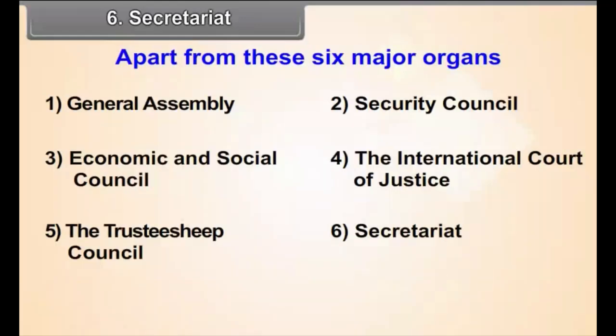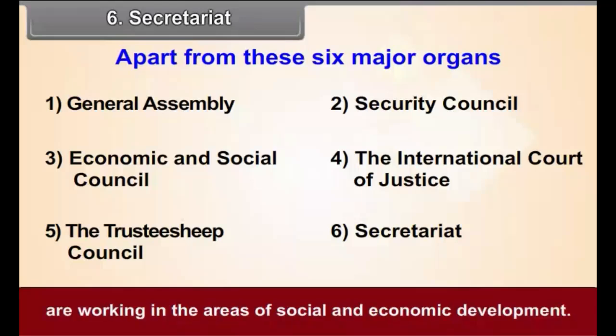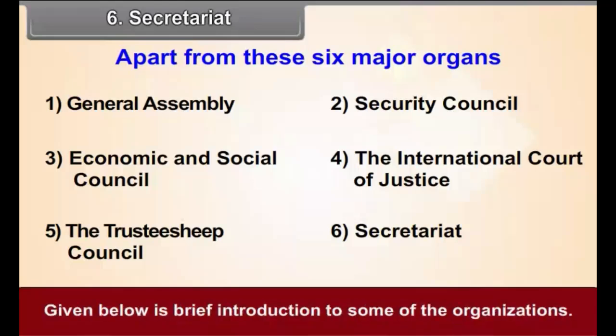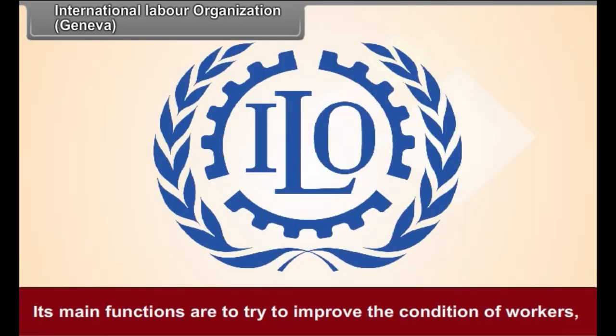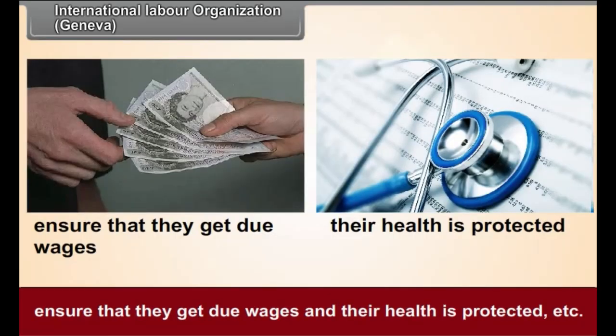Apart from these six major organs, many affiliated organizations of the UN are working in the areas of social and economic development. International Labour Organization, Geneva: Its main function is to try to improve the condition of workers, ensure that they get due wages and their health is protected.